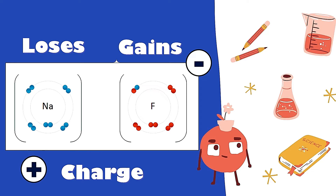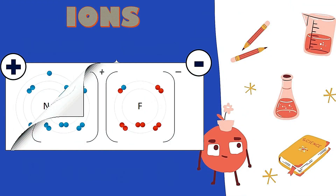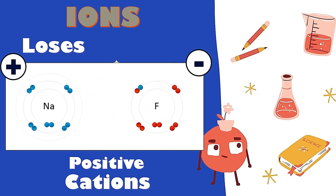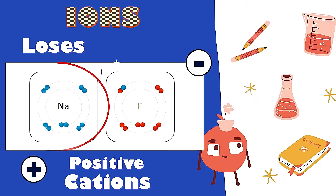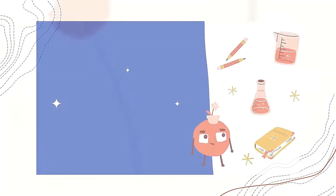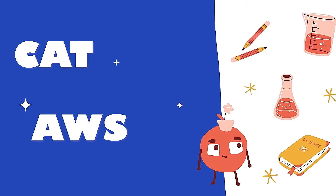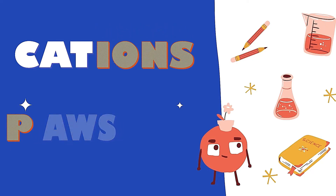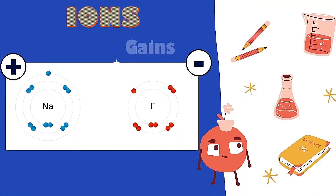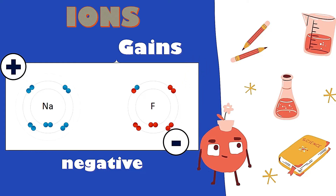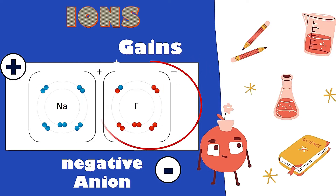It can be a positive or a negative ion. What happens when an atom loses an electron? It becomes positive. Remember: if it loses, transfers, or gives electrons, it becomes positive. For example, sodium becomes positive since it transfers its electrons. Remember the term: cation is positive. What happens when an atom gains electrons? It becomes negative. If it gains or receives electrons, it becomes negative. For example, fluorine becomes negative since it receives electrons.